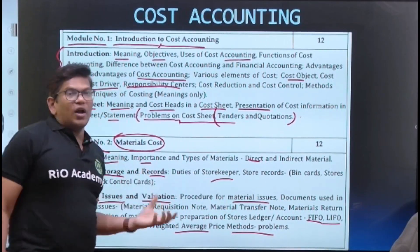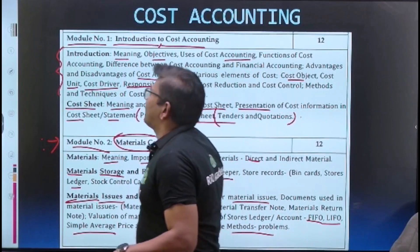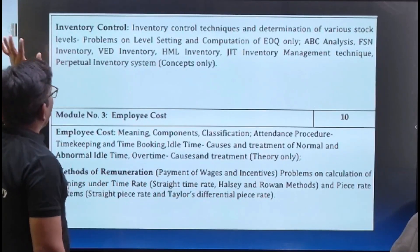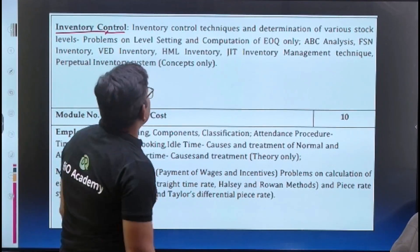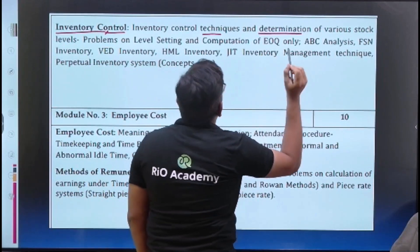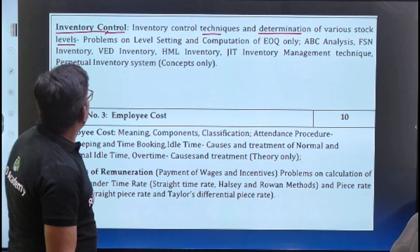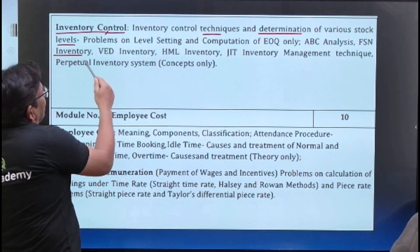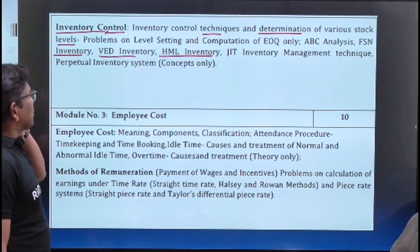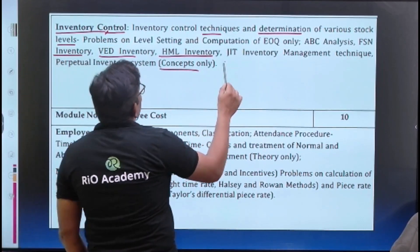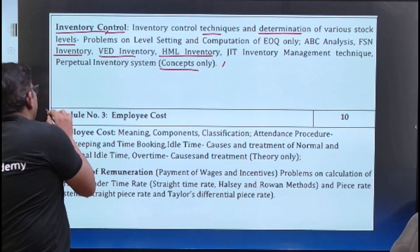In Module 1 you can expect more than 15 marks on cost sheet, and in Module 2 similarly around 15 marks. Next is inventory control — another very important concept in the material module. Inventory control covers determination of stock levels: maximum stock level, minimum stock level, economic order quantity, and inventory management techniques such as FSN, VED, HML, and perpetual inventory — mostly theoretical concepts.